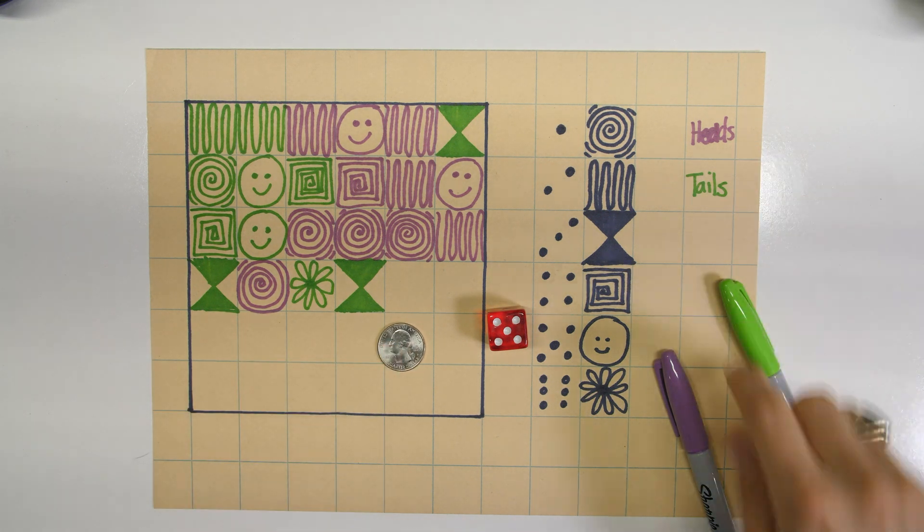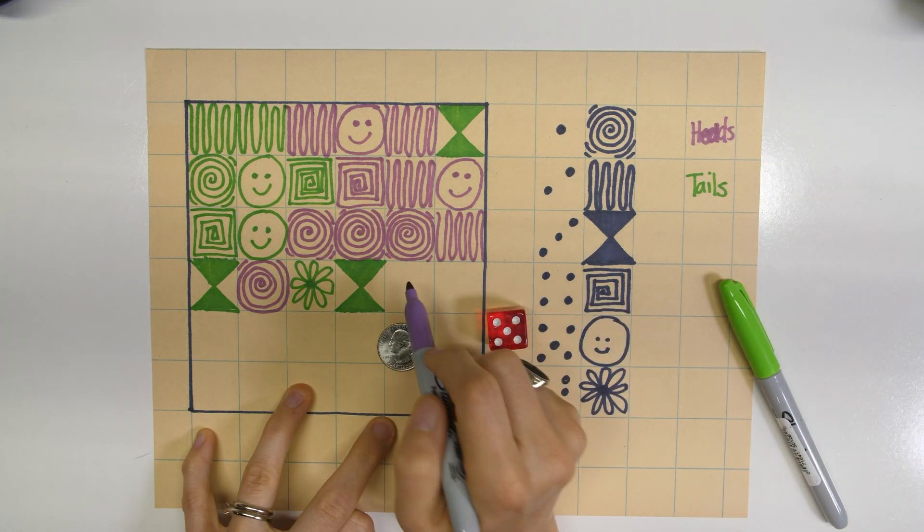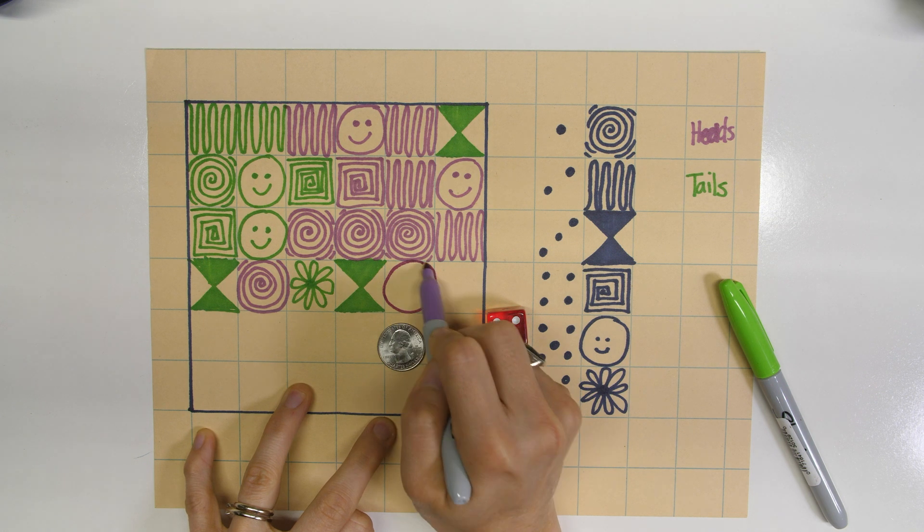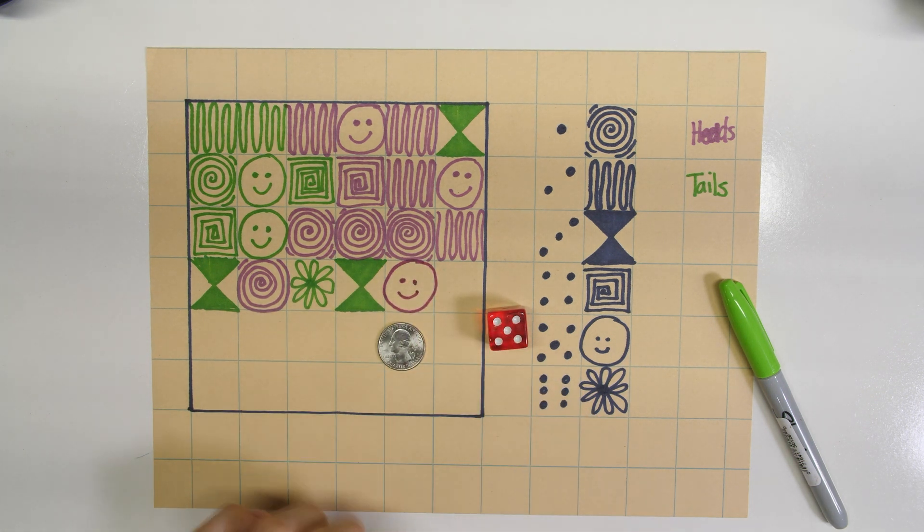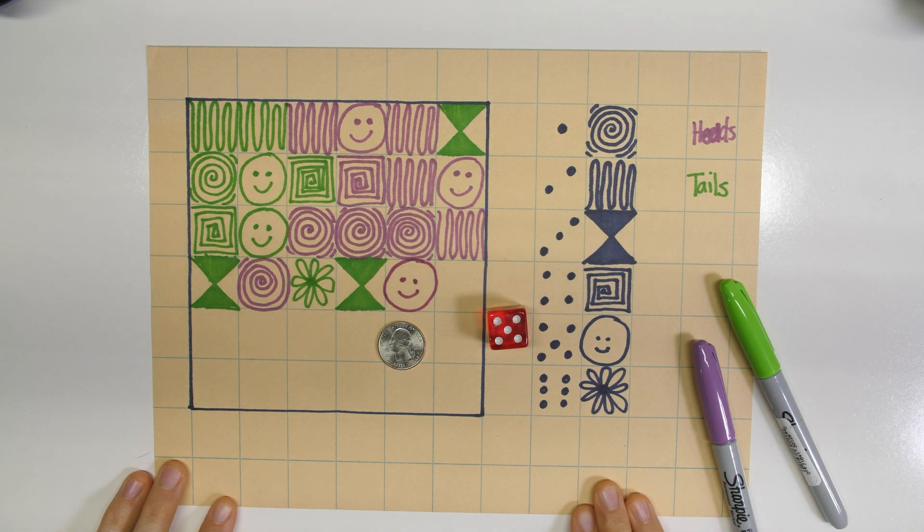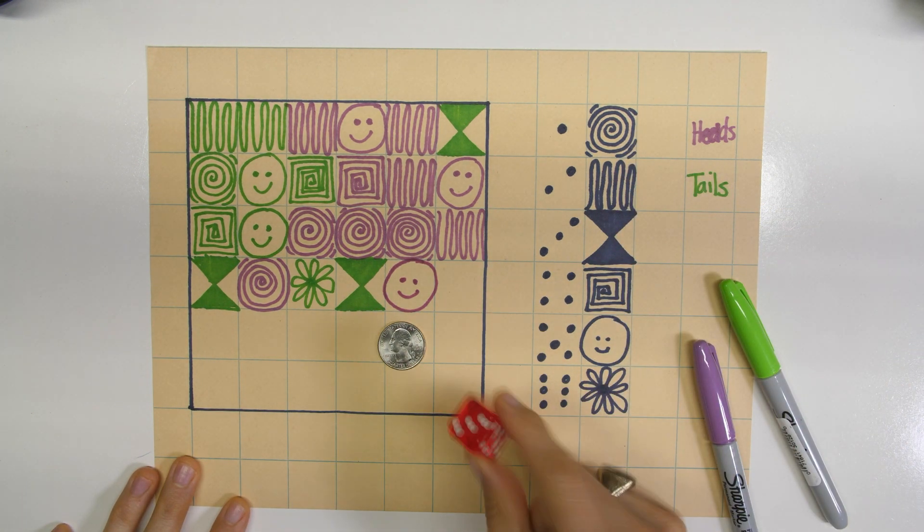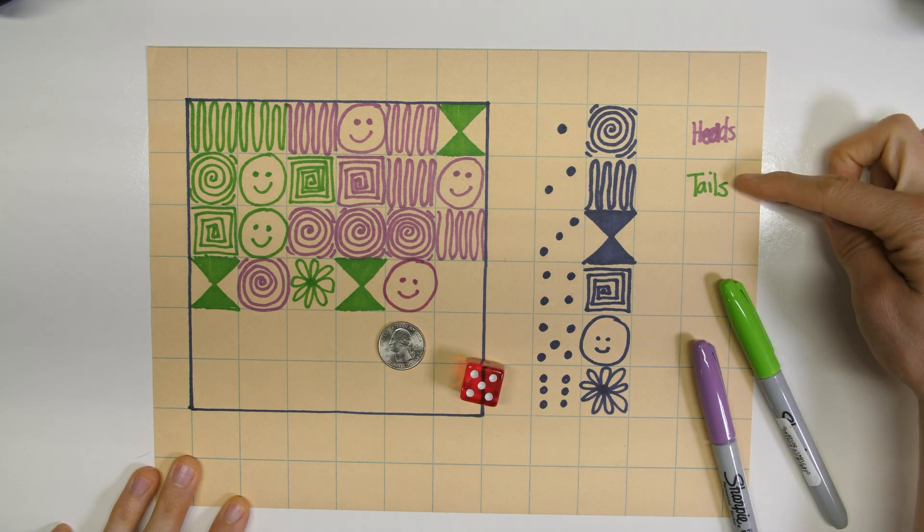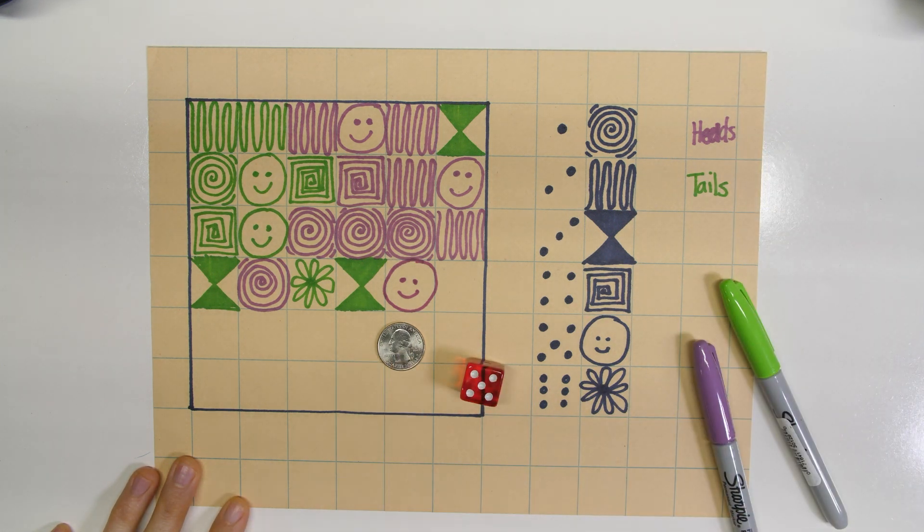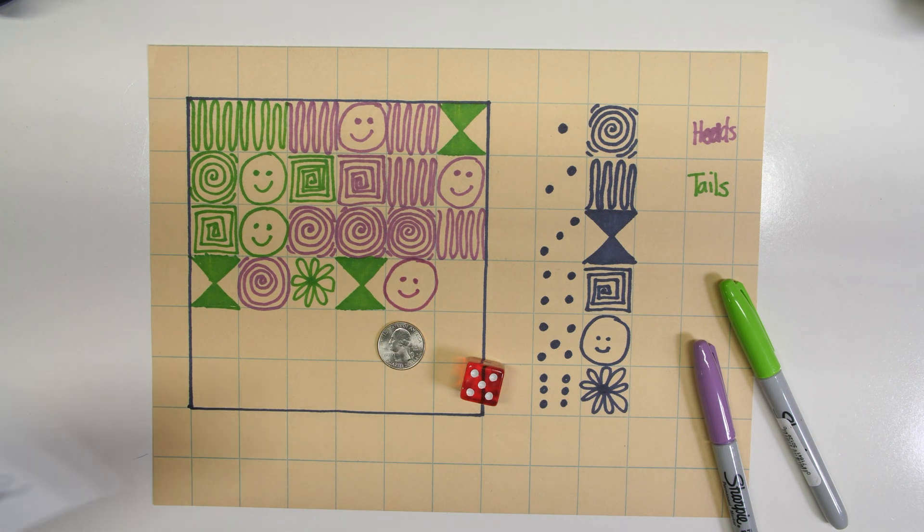I got a five and heads, that's going to be purple. Well, I have been busy creating my probability dice art challenge here, and you can see that I am choosing my design based on what I roll on the die and then choosing the color based on what I flip on my coin.